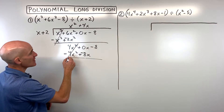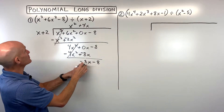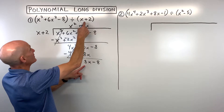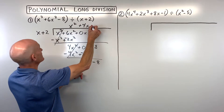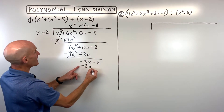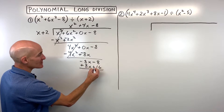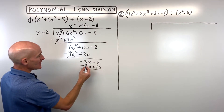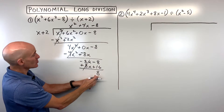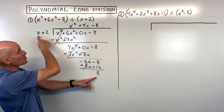That comes out to negative 8x minus 8. We say: what times x equals negative 8x? That's just going to be negative 8. When I distribute negative 8 to both terms, we get negative 8x minus 16. We change the signs to the opposite and add — that cancels out, and we're left with positive 8. Notice that 8 is a constant (zeroth degree), whereas the divisor term is first degree. When this degree is lower, that's our remainder.